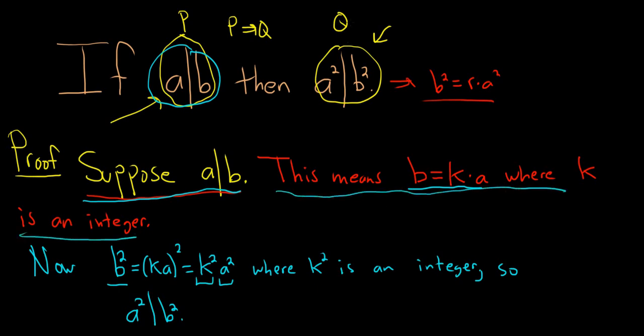And then you have to think about what you're trying to show. You're trying to show that q is true. So you say, okay, you're trying to show that a squared divides b squared. That means that b squared is a multiple of a. So the natural thing to do is to start by writing down b squared and then see if it leads you to where you want to be.